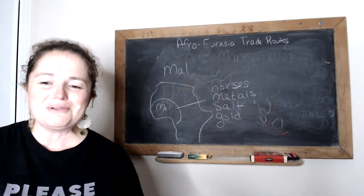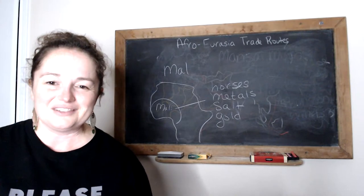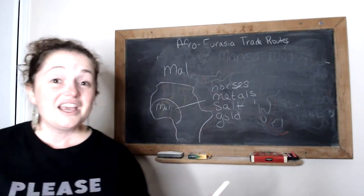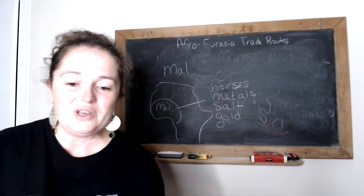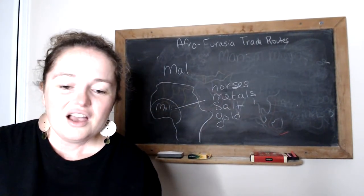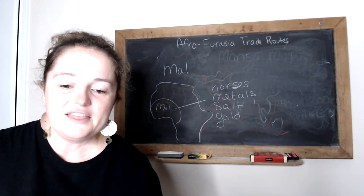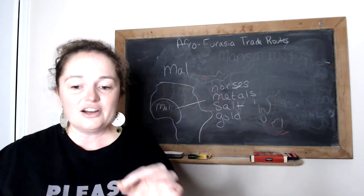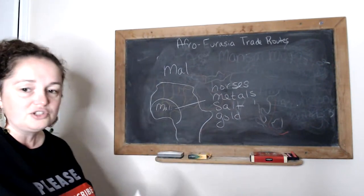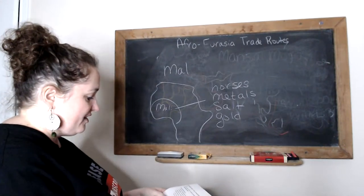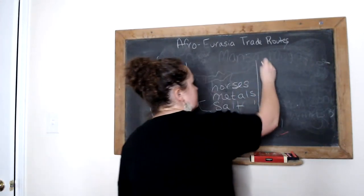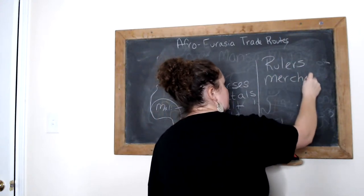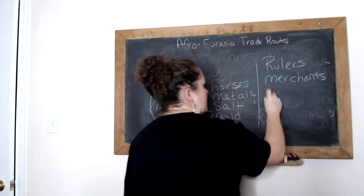Rulers in Mali want to keep merchants happy because of the money. Compare this to Chinese society, where peasants are placed above merchants because food is more important — it shows what a civilization values. Timbuktu is a really important city that connects with the trade routes and is one of the biggest trading centers in that area.